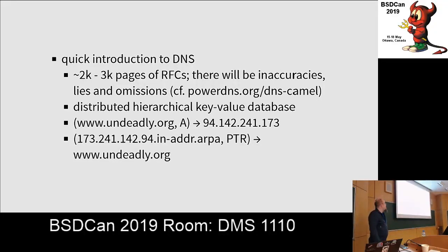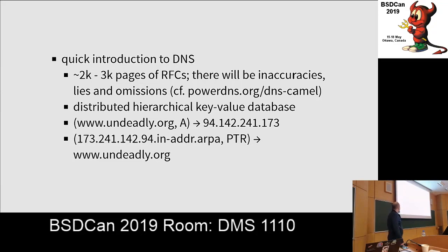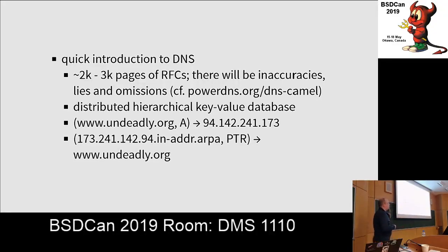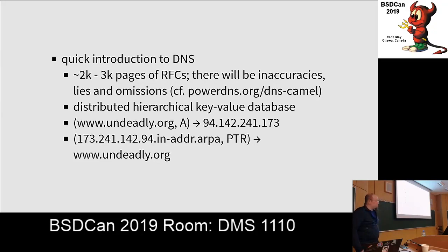Think of DNS as a distributed, hierarchical key-value database. You have a tuple — a name like n.org — and a type, 'A' which stands for address, which maps to an IP address. You can also turn this around to get from an IP address to a name. These are not actually connected — you can put in there whatever you want. To do that, you flip the IP address around, add 'in-addr.arpa' to it, and you get that.